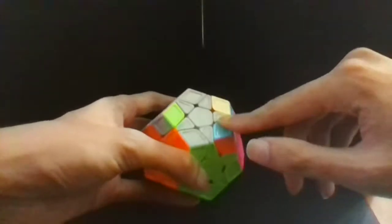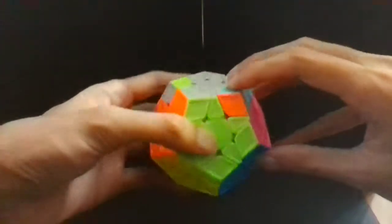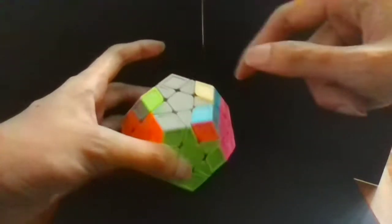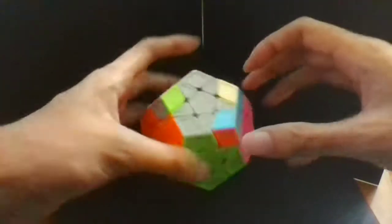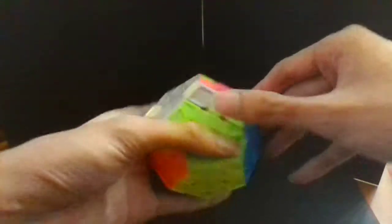Then we solve the last three edges. We can use a Sun for this. So like remove this blue edge over here, this yellow edge over here, this pink edge over here.